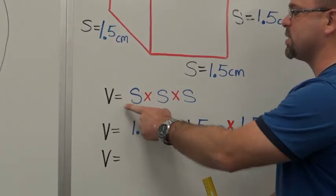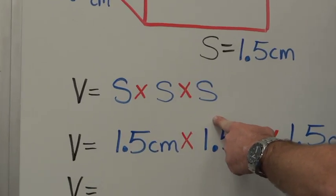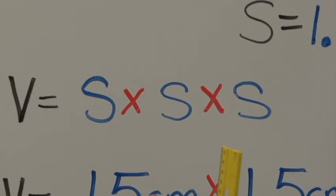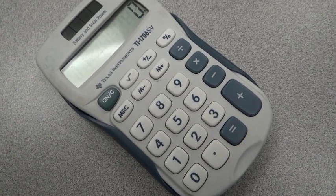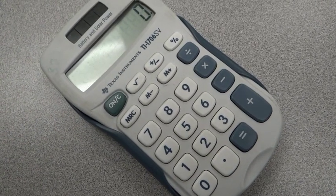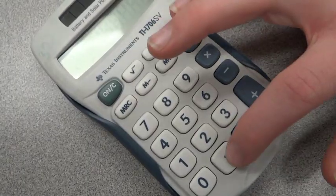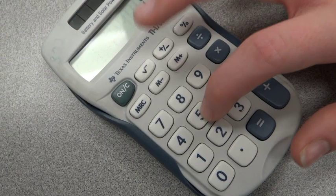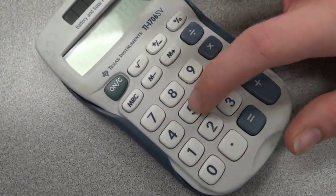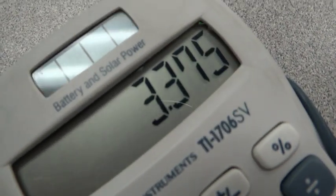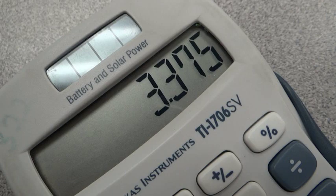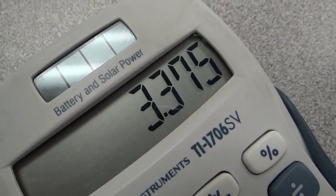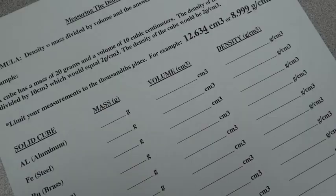Let's say we find that one side is exactly 1.5 centimeters long. The formula for calculating the volume of a cube is: volume equals side times side times side. So we plug in 1.5 cm × 1.5 cm × 1.5 cm. On the calculator, punch in 1.5 × 1.5 × 1.5 and press equals. The answer is 3.375 cubic centimeters. We're going to keep our numbers to the thousandths place — that's the 5 in .375.